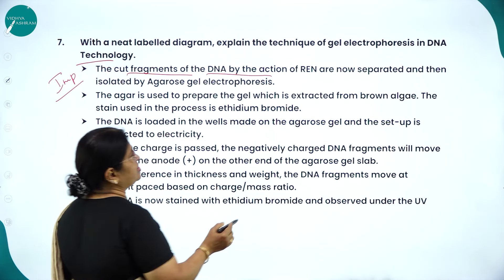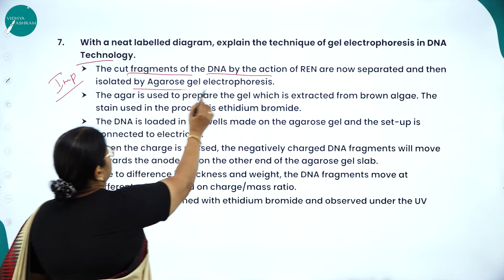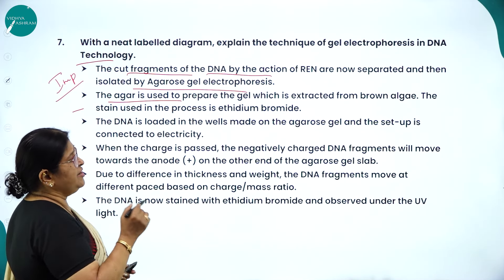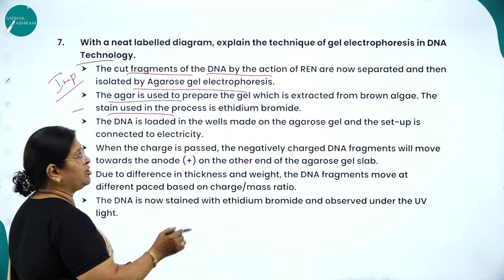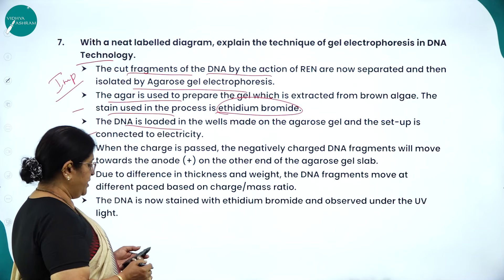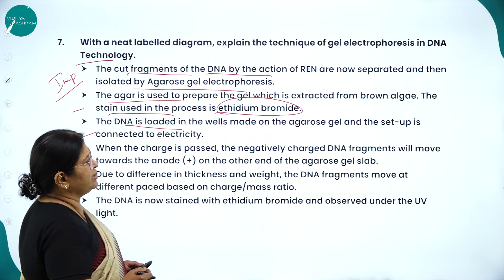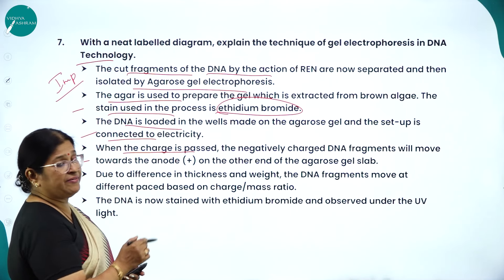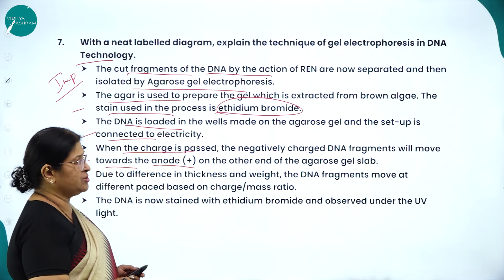The cut fragments of DNA produced by restriction enzymes are separated and isolated by agarose gel electrophoresis. Agarose is used to prepare the gel — it is extracted from brown algae, hence the name. The stain used is ethidium bromide. DNA is loaded into wells made on the agarose gel, the setup is connected to electricity, and the negatively charged DNA fragments move towards the anode.